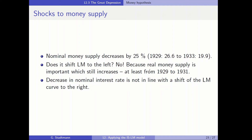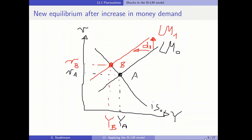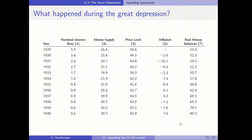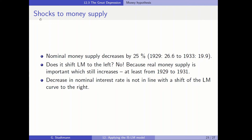Furthermore, we should think about what happens if the LM curve would shift to the left. When the LM curve shifts to the left because real money supply decreases, it will lead to an increase in the interest rate. This is also something we cannot see in the data, because on slide 21 the interest rate is decreasing in this time period, not increasing. Therefore, a first conclusion is that it seems to be the case that shocks to goods demand were leading to this Great Depression, and not so much shocks to money supply — at least it was not the case that real money supply decreased in the beginning.